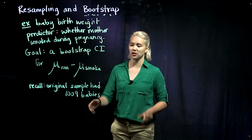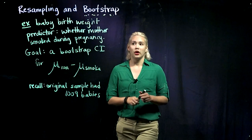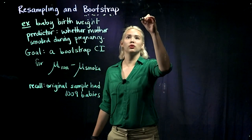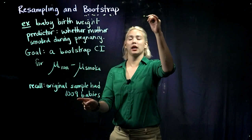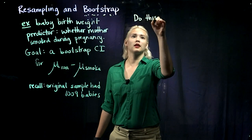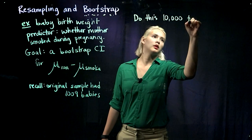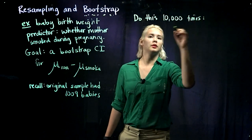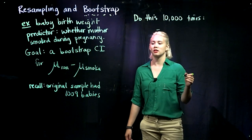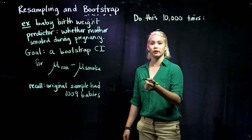A useful piece of information is that our original sample had 1,009 babies. So if we want to bootstrap, we start by remembering we had 1,009 babies. Then we're going to do this next step a large number of times — maybe 10,000 times — randomly selecting, with replacement, 1,009 observations from our original sample.